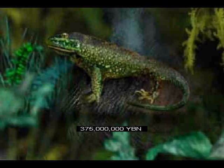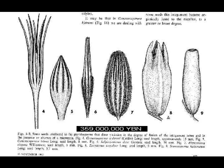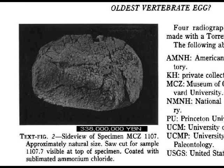First tetrapods — organisms with four feet — the amphibians. First limbs: arms and legs, and fingers. Vertebrates live on land. First seed. Hard shell egg.